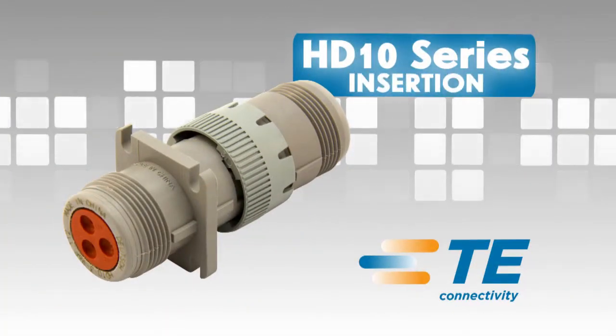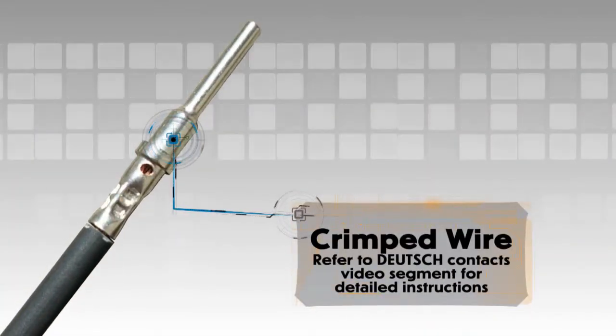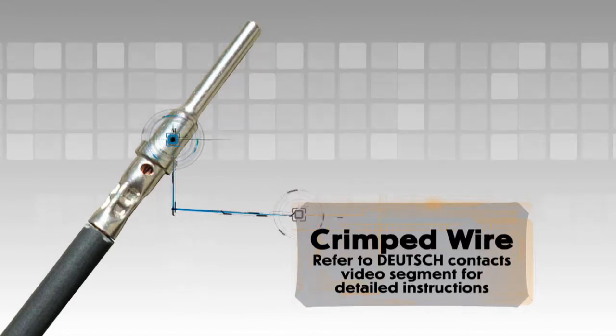HD 10 insertion. Begin with a crimped wire. For assistance, refer to the Deutsch contacts video segment for detailed instructions.